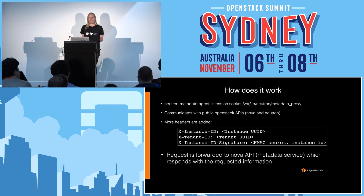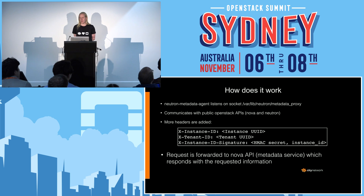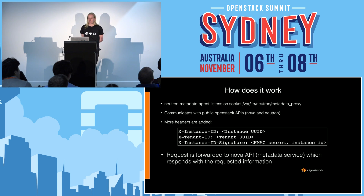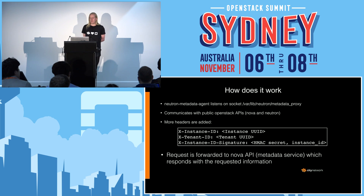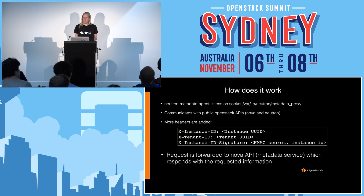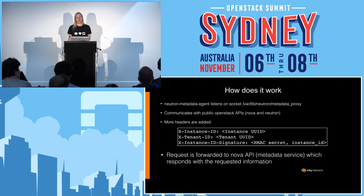With this information, it can add a couple more headers that are needed for actually doing the request. Those headers are the X-Instance-ID, which is the instance UUID, and the X-Tenant-ID, which is the ID of the tenant that owns the instance. Also, there is an X-Instance-ID-Signature added, which is a cryptographic HMAC done over the shared secret and the instance ID. The request is then forwarded to the Nova API metadata service, which finds the requested information and sends a response back to the instance.